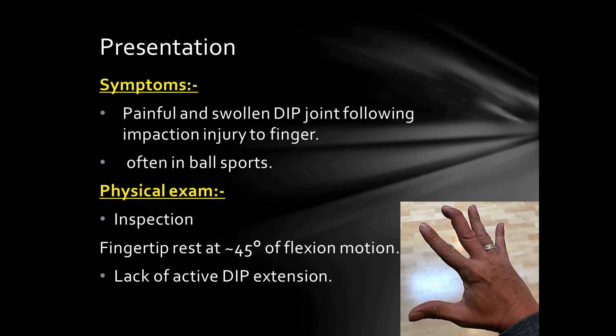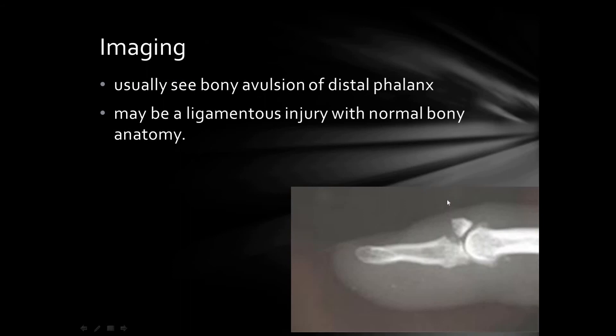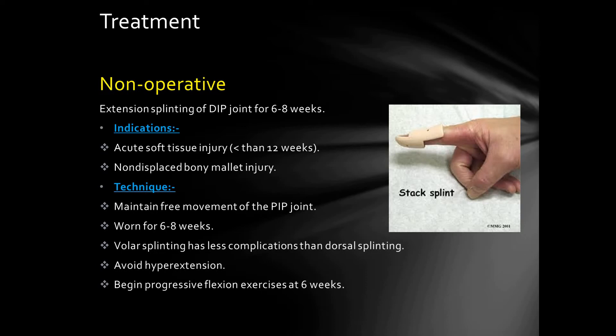Patients with mallet finger usually present with a painful and swollen distal interphalangeal joint following impaction injury, usually involving a ball. On physical examination, the fingertip rests at 45 degrees of flexion and there is lack of active distal interphalangeal joint extension. Mallet finger is a clinical diagnosis; however, X-rays are done to rule out bony mallet finger and to assess for subluxation.